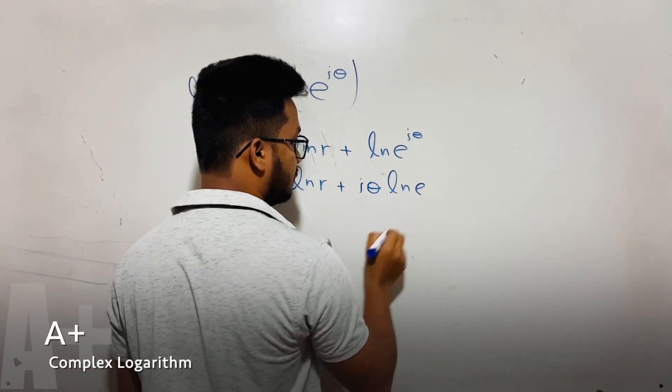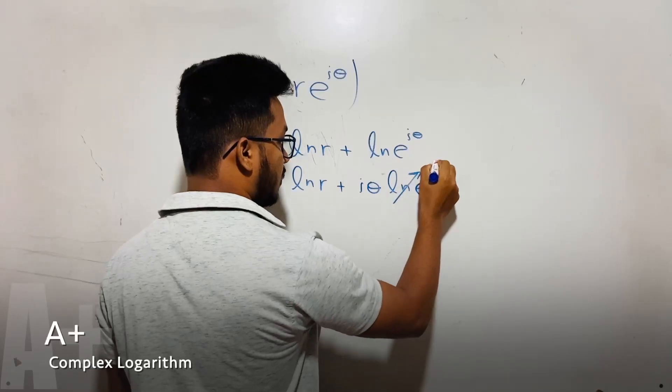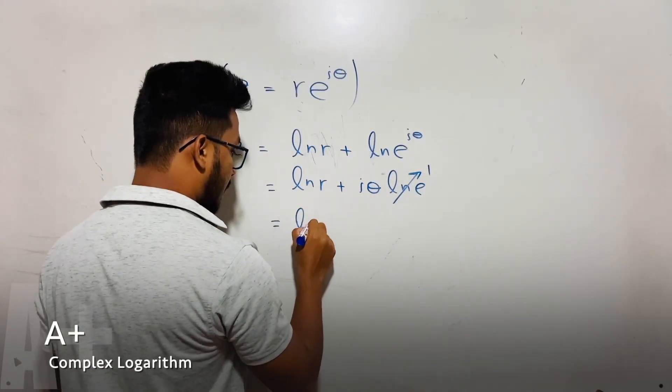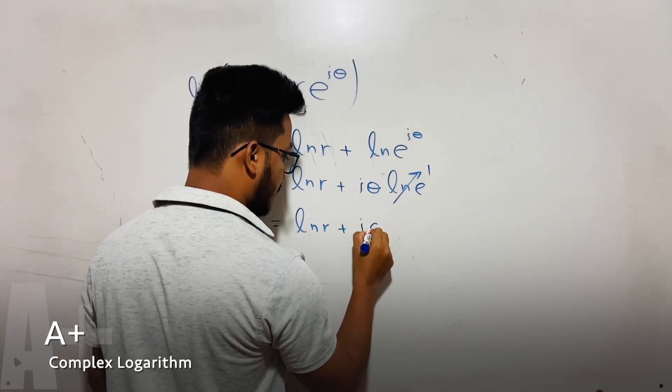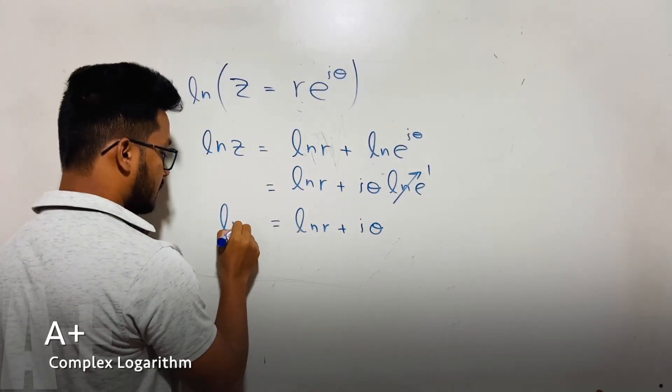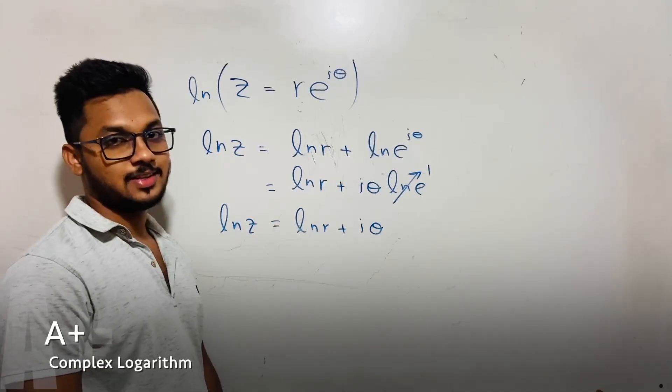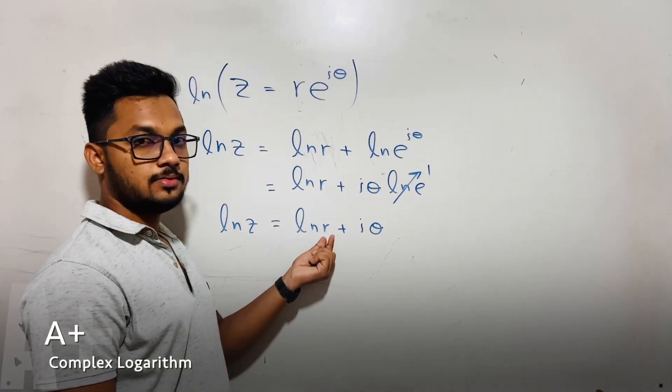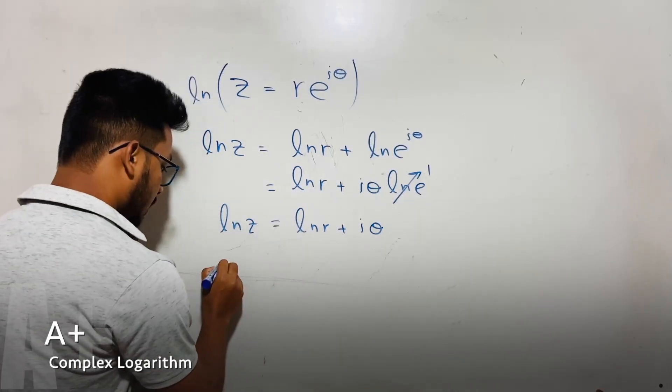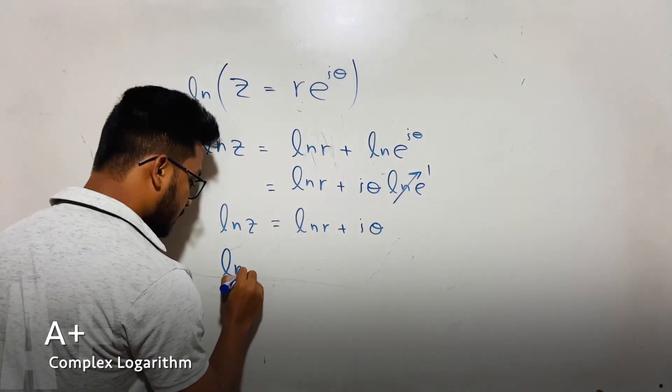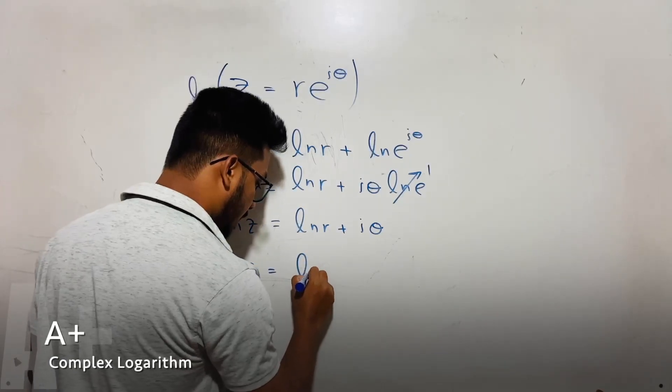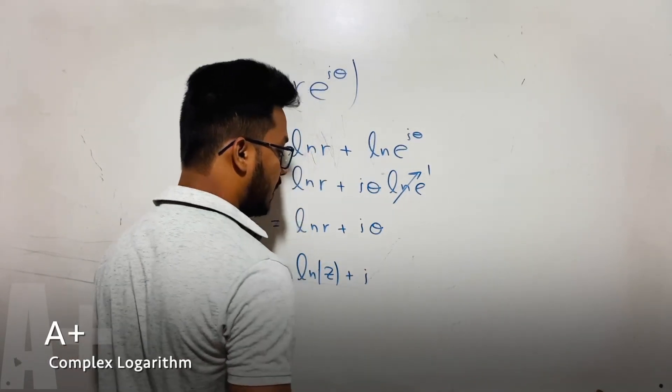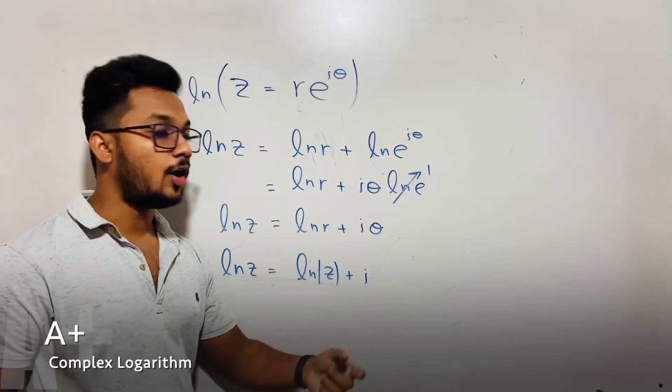ln e equals 1, and we're left with ln z equals ln r plus i theta. This is a very simple thing. So what's the meaning of this? r means modulus of our complex number, and theta means argument.